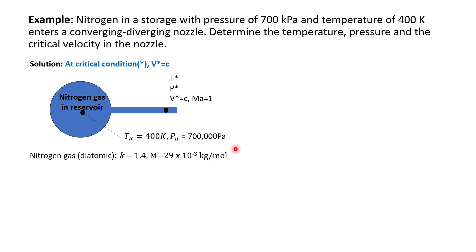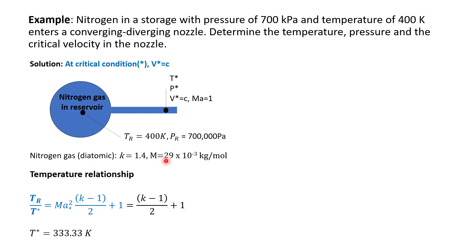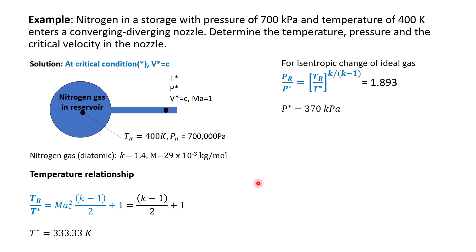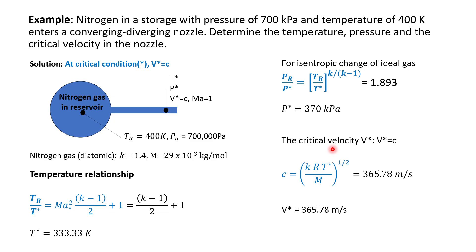I'll make an illustration of the physical meaning of the problem. Since this is nitrogen, we get the appropriate properties: nitrogen has a k value of 1.4 and molar mass of 28. To get the temperature we use the temperature relationship, substituting all parameters. For pressure we use the isentropic ideal gas equation to find P*, and for critical velocity we use the speed of sound equation.